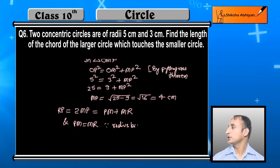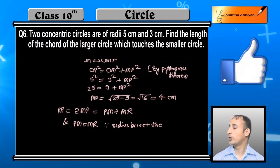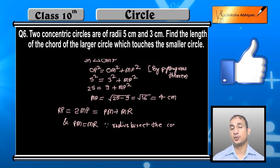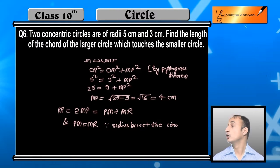Since radius bisects the chord, the radius of the smaller circle bisects the chord.